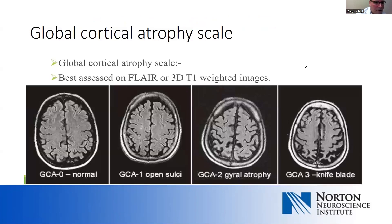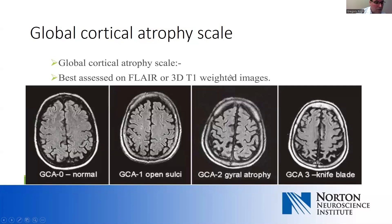There are other scales that measure global atrophy. Global atrophy is a bit more nonspecific, but as a whole, brain atrophy does correlate with cognitive abilities and is to some degree a predictor of dementia. This scale goes from zero to three and demonstrates different levels of opening and widening of the sulci, until you get to this sort of knife blade-like atrophy — in this case, in the parietal lobes.